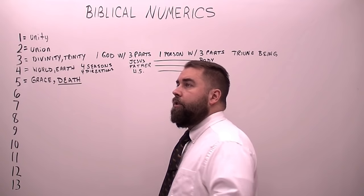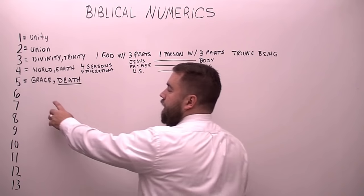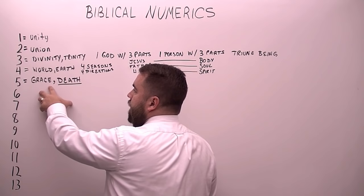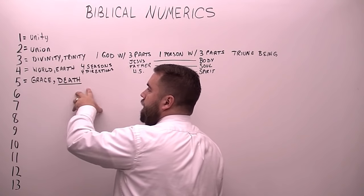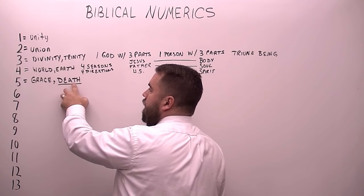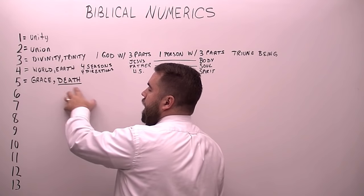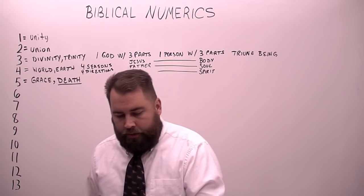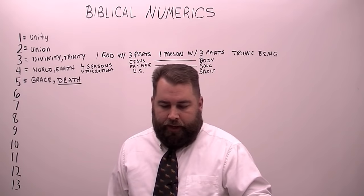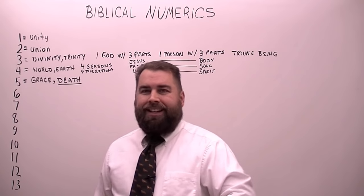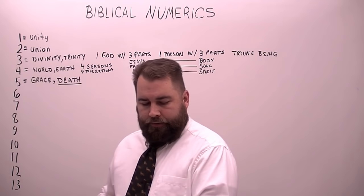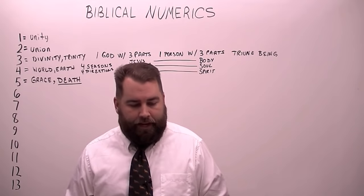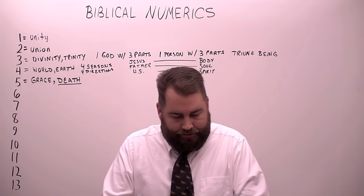A lot of people say five is also the number of grace — grace has five letters, Jesus has five letters. Well, Jesus also died. Death has five letters. So as you read through the Bible, you find that the number five shows up a lot and has a lot of connection with dying. Five is the number of death.